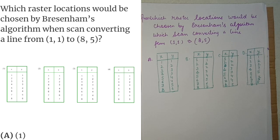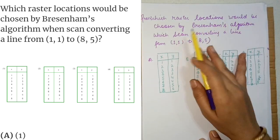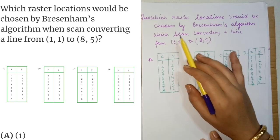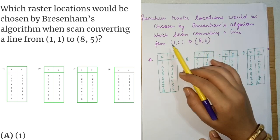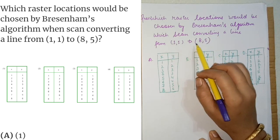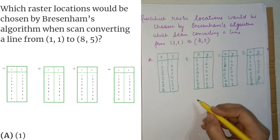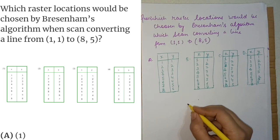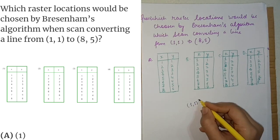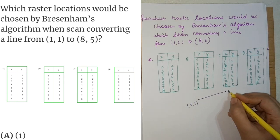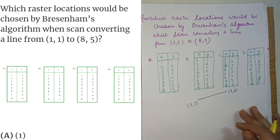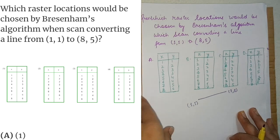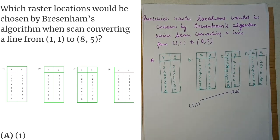Hello friends, today we are going to discuss a previously asked UGC NET question in computer science. Which raster locations would be chosen by Bresenham's algorithm when scan converting a line from (1,1) to (8,5)? The starting point coordinates are (1,1) and the ending point is (8,5).